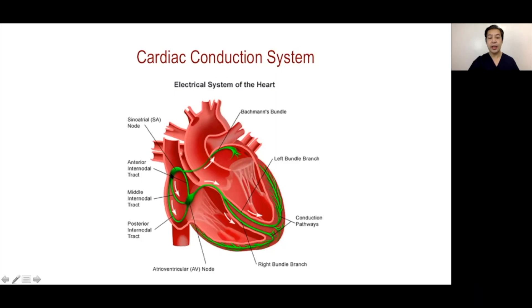The SA node is an epicardial structure, around 8 to 10 millimeters, and it has blood supply nearly equally from the right coronary artery and the left circumflex artery.